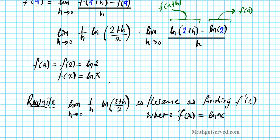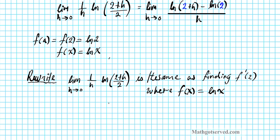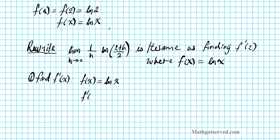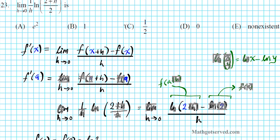The limit as h approaches 0 of 1 over h times the natural logarithm of 2 plus h over 2 is the same as finding f prime of 2 where f of x equals the natural logarithm of x. So step one: find f prime of x. The derivative of the natural logarithm of x, using your differentiation rules, is 1 over x. Step two: evaluate the derivative at 2. Since a equals 2, f prime of 2 is simply 1 over 2. You substitute 2 into the derivative function, and that is your final answer. The correct answer is option letter C.